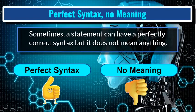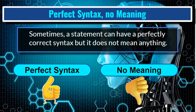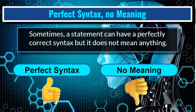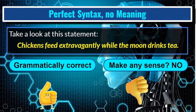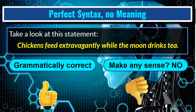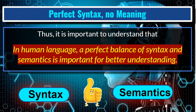The third difficulty: perfect syntax but no meaning. Sometimes a statement can have perfectly correct syntax and grammar but does not mean anything — the statement makes no sense. For example: 'Chickens feed extravagantly while the moon drinks tea.' The statement is grammatically perfectly correct but makes no sense. Thus in human language a perfect balance of syntax and semantics is important for better understanding — both should be perfectly balanced.